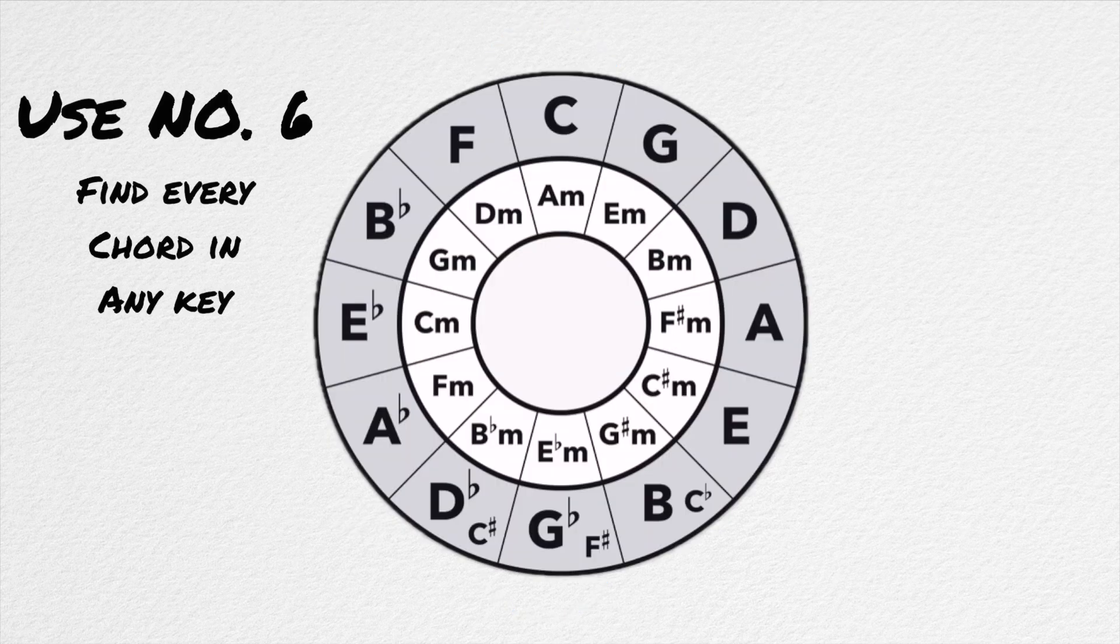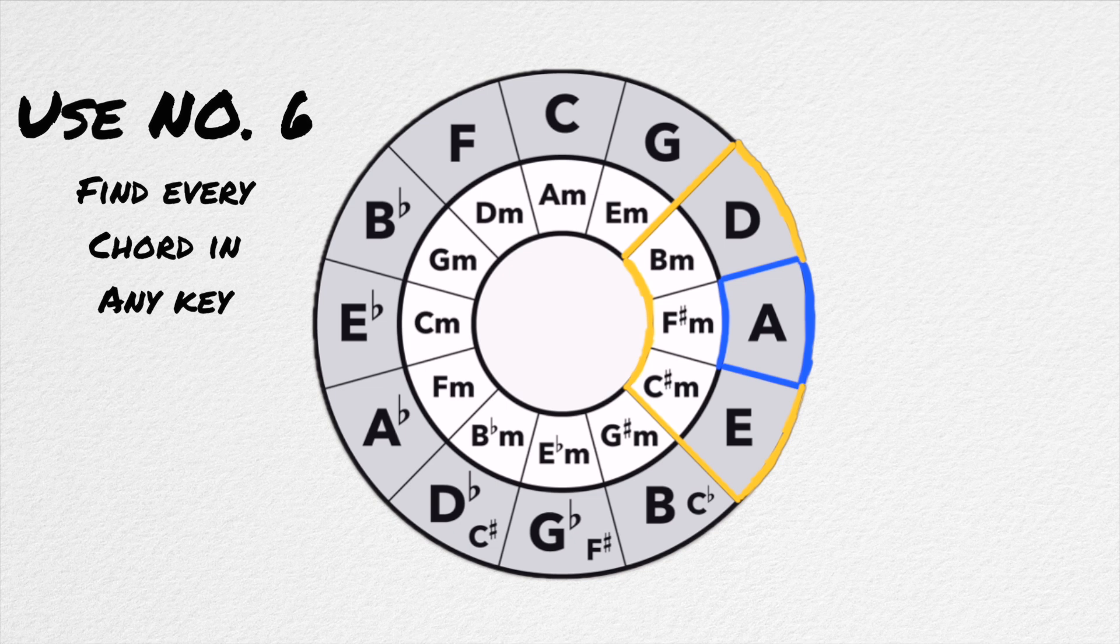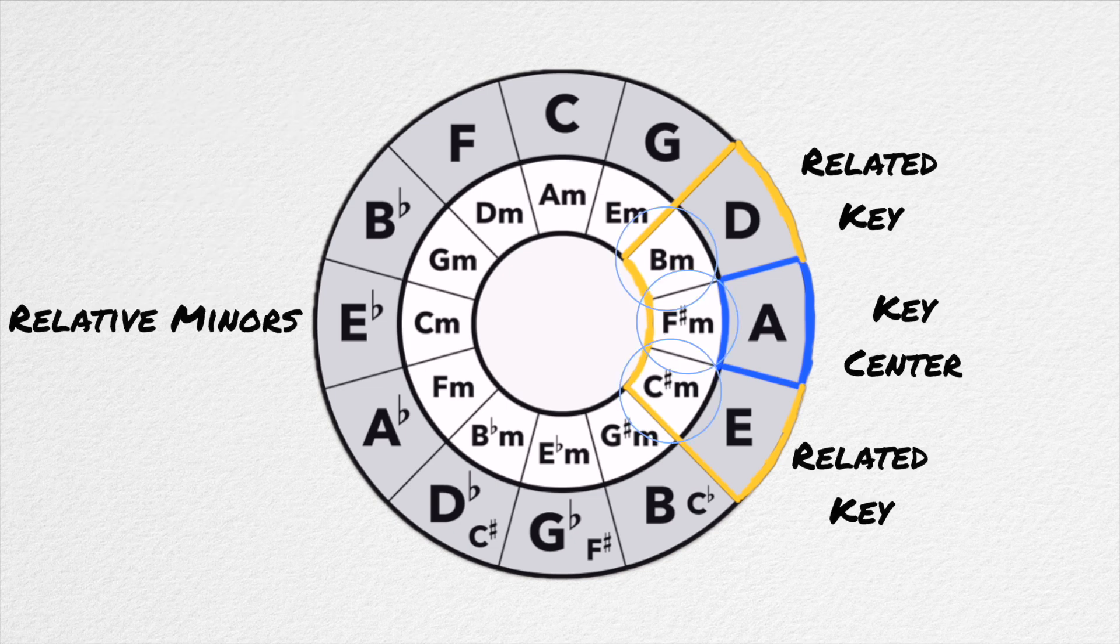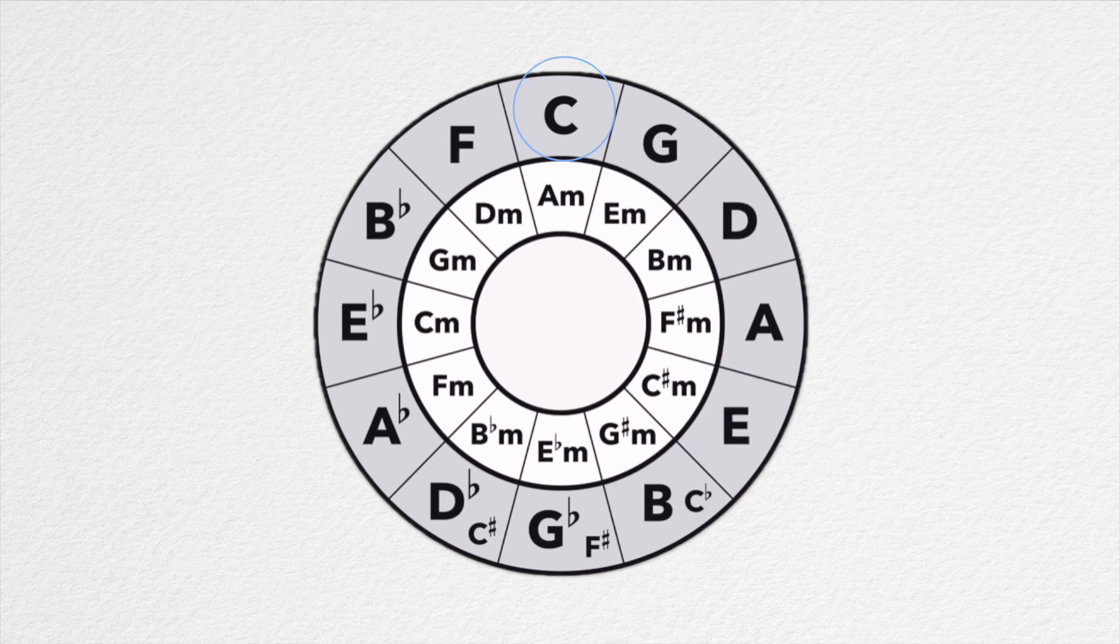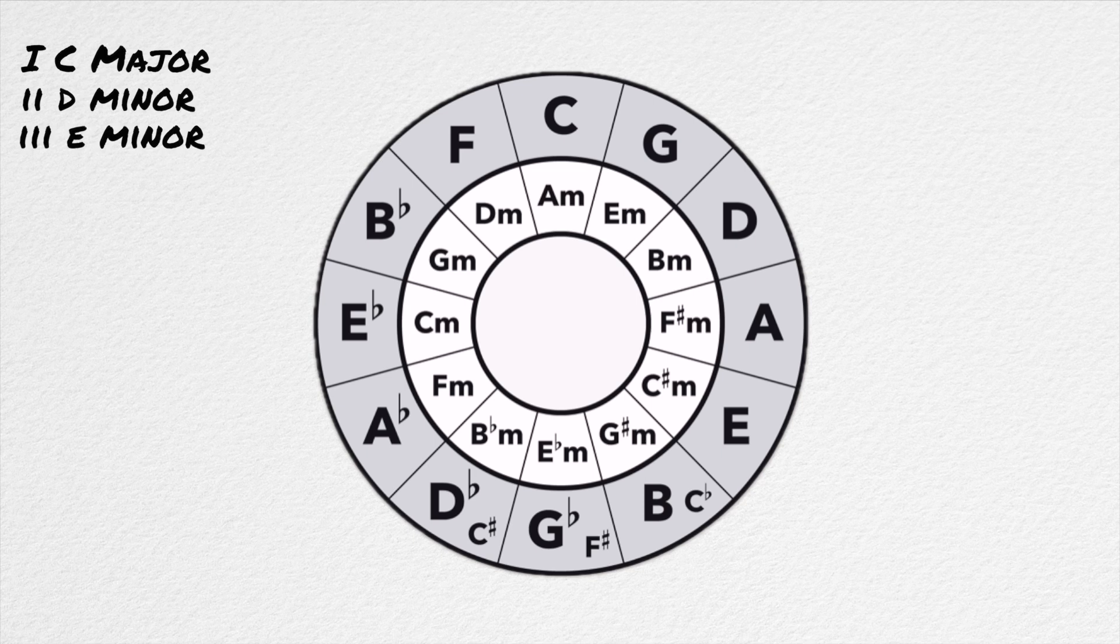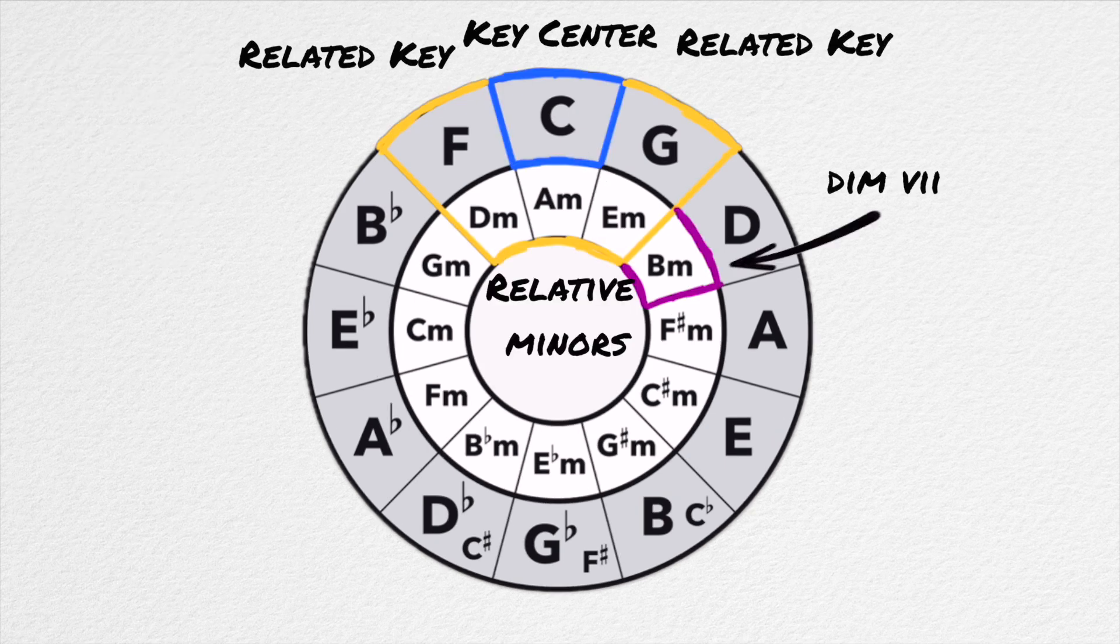And if we use the version of the circle with the relative minor keys included, we can also derive every major and minor chord in any key. Take your key center and the notes on either side, plus all of their relative minors, and you will get all of the major and minor chords in your key. For example, C has F and G on either side, and the relative minor of C is A minor. The relative minor of F is D minor, and the relative minor of G is E minor. All of the major and minor chords in C major are C, D minor, E minor, F, G, and A minor. The only chord that's missing is the diminished chord, which you can find by adding just one little bump to your shape.